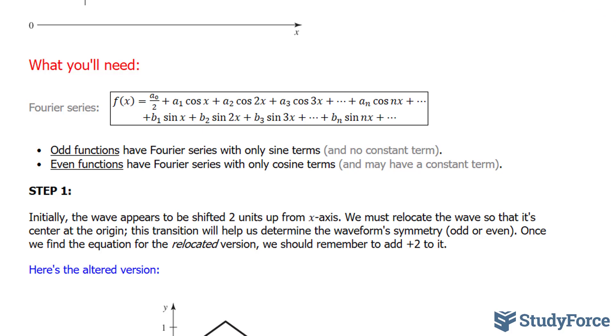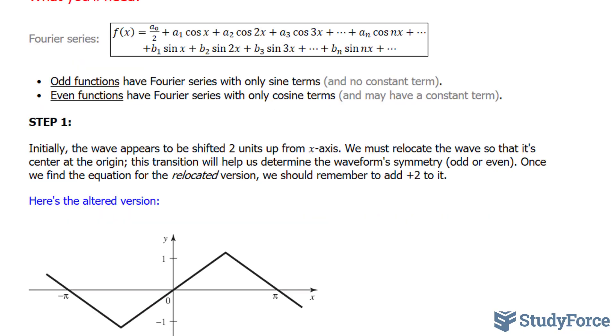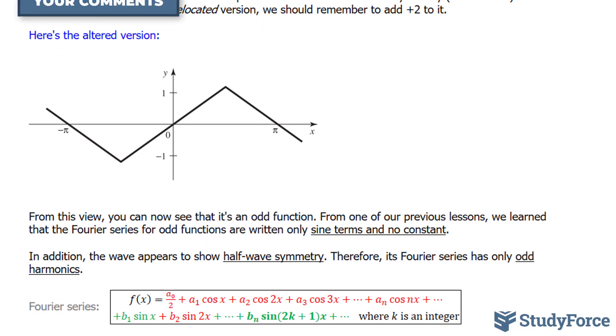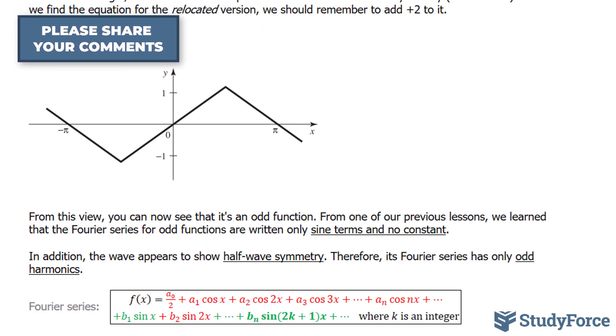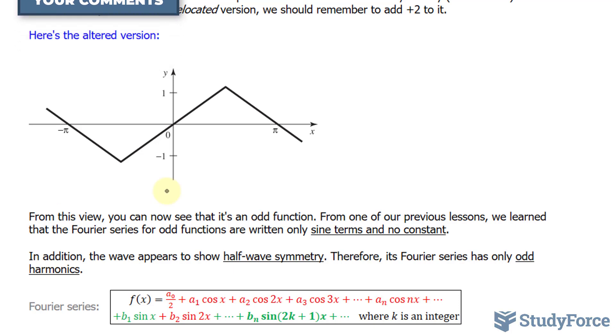Once we find the equation for the relocated version, we should remember to add +2 to it, because it was initially two units up. This is what the altered waveform looks like if we move the x-axis two units up. You'll notice that now, if you were to reflect this about both axes, it would look identical. So we can say that the function is odd.